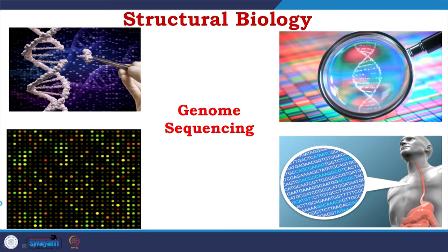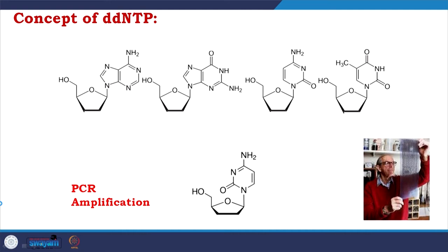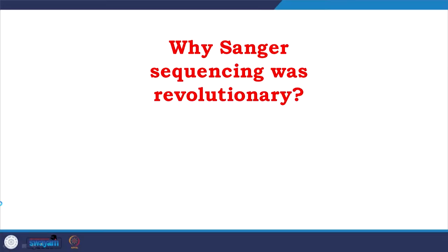Hi, welcome again to the course of Structural Biology. Today we are going to class 4 and we are going to discuss genome sequencing and the interesting phenomena that changed around it. We talked about the concept of dideoxynucleotide phosphate which helps us understand chain termination. This along with PCR amplification gives us Sanger sequencing, which changed biology for the first time — we learned how to read biological macromolecules. Sanger sequencing was revolutionary, and today I will talk about the journey from a gene to an entire genome.